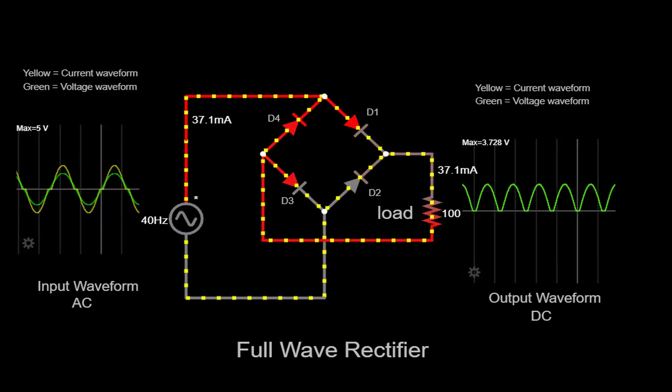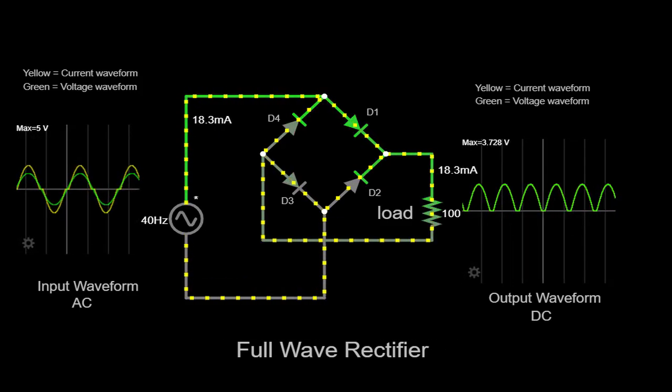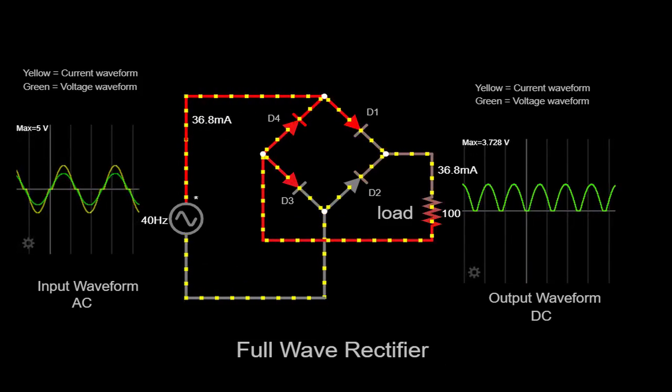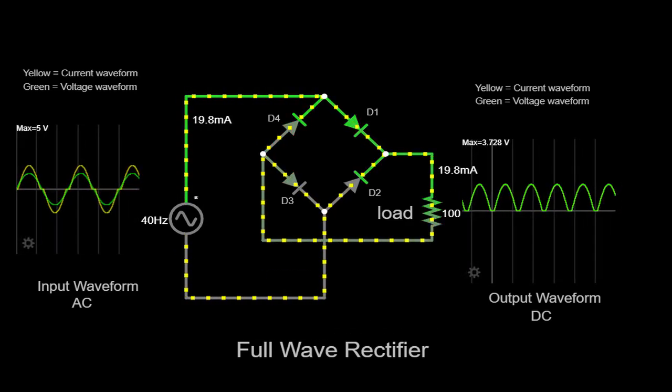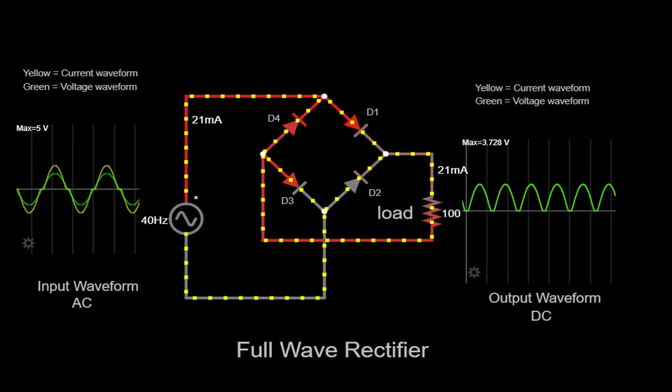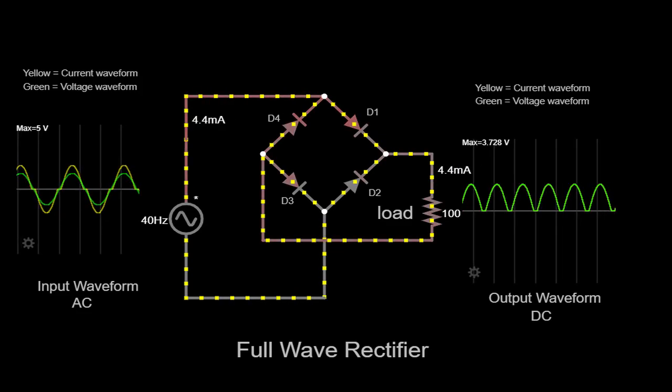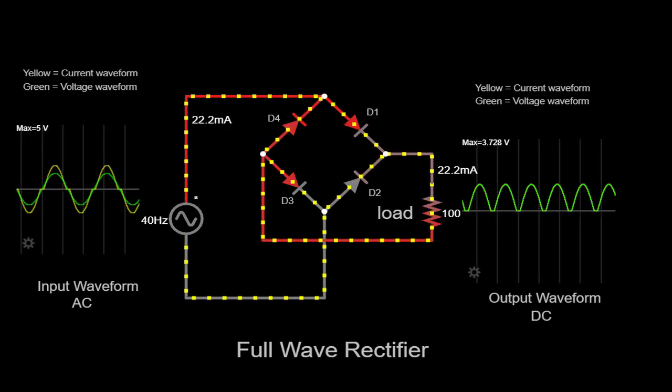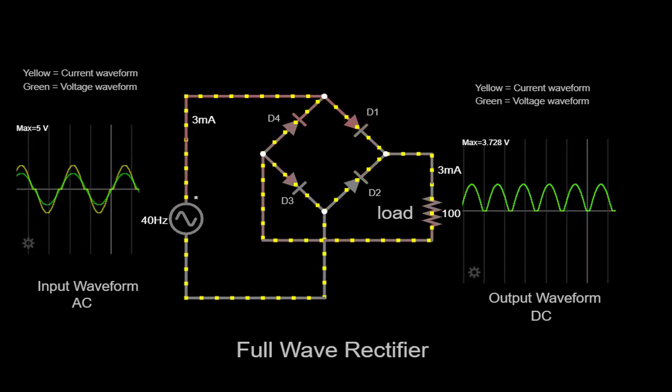In addition to the voltage waveform, we can also observe the current waveform on the scope. During the positive half cycles of the input, the current flows through the load resistor in one direction. As the input voltage becomes negative, the current reverses its direction and flows through the load resistor in the opposite direction. This bidirectional flow of current is a characteristic of a full-wave rectifier.